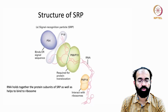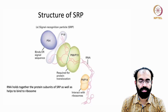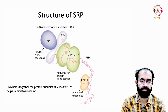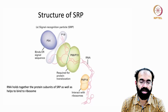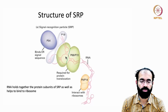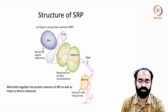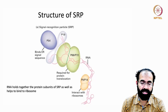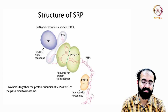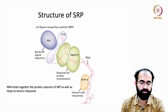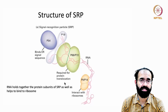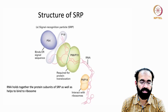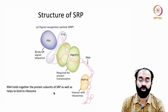If you look at the structure of SRP — signal recognition particle — it is a complex of proteins and RNA. There are protein molecules such as p54, which binds to the ER signal sequence; p19; p68 and p72, which form a dimer; and p9 and p14, which interact with the ribosome. The 'p' stands for protein and the numbers refer to their molecular weight in kilodaltons. p68 and p72 are required for protein translocation — they bind onto the signal peptide recognized by SRP.